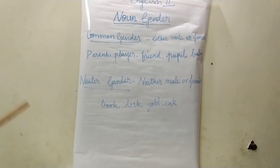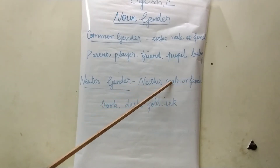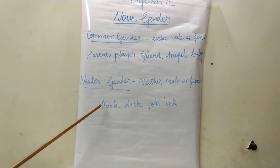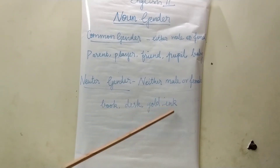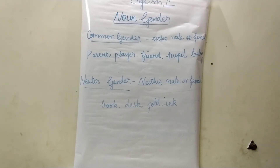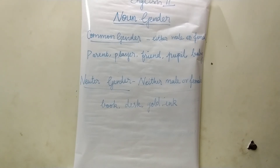Neuter gender refers to neither male nor female. For example: book, desk, gold, ink, taxi, van, school, umbrella, watch, lamp, knit, chair, hat, kite, mat, pot, etc. Also keep in mind: collective nouns such as army, people, nation, flock, class, and group — though used to signify a collection or group of living things — are classified as neuter gender.